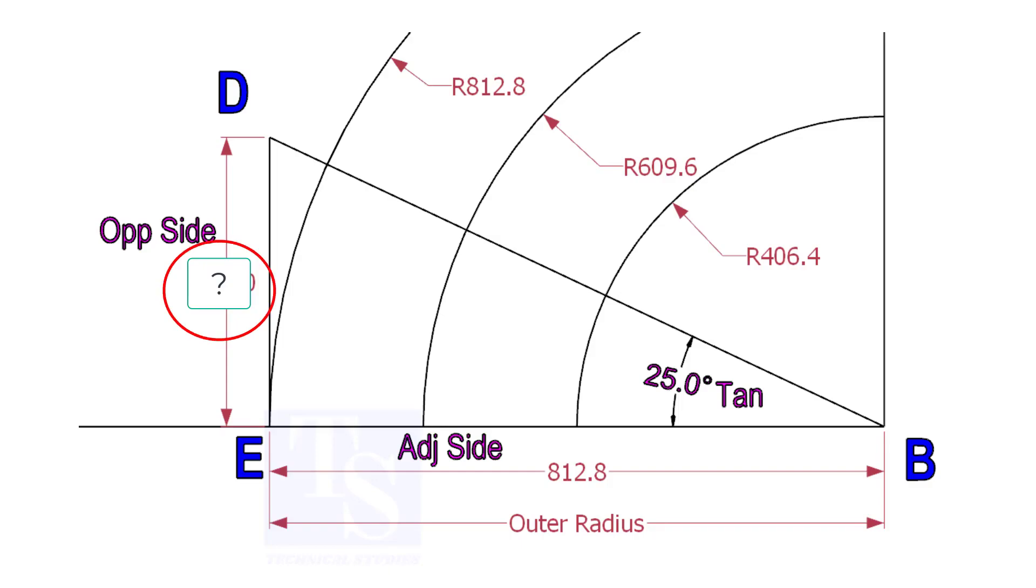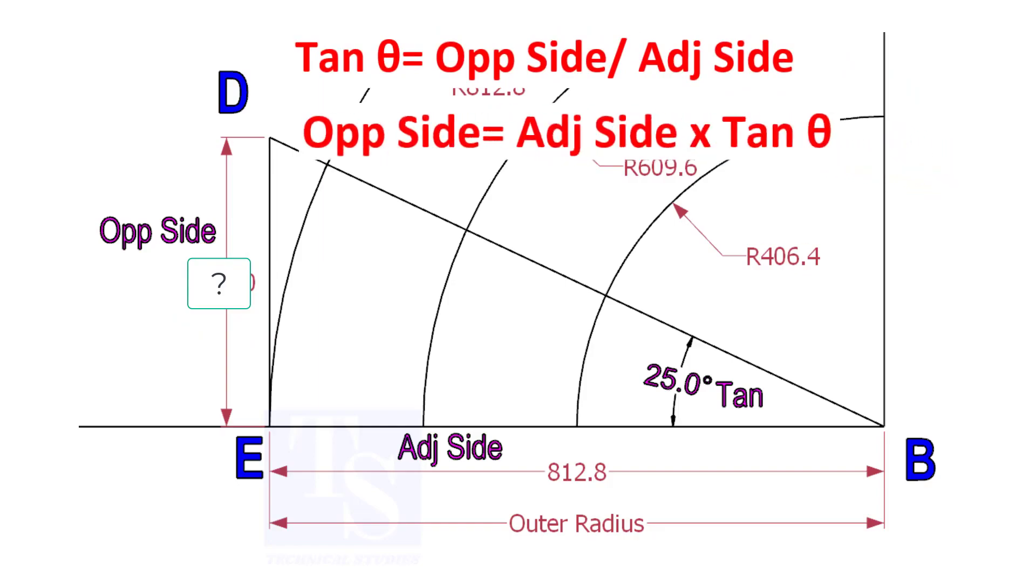To calculate ED, we need to apply the formula: tan-theta equals opposite side divided by adjacent side. Opposite side equals adjacent side multiplied by tan-theta.